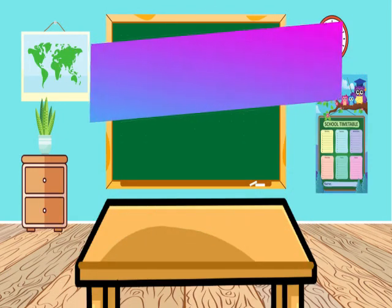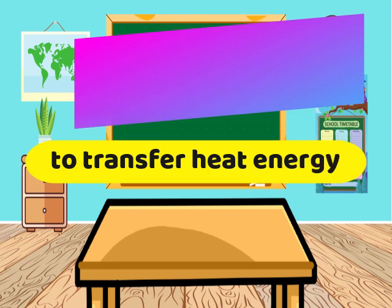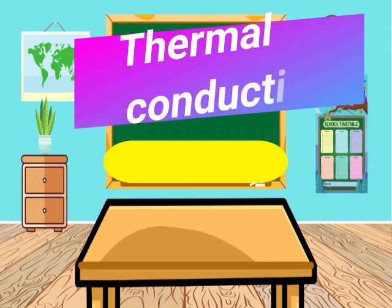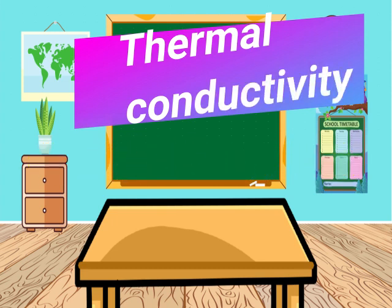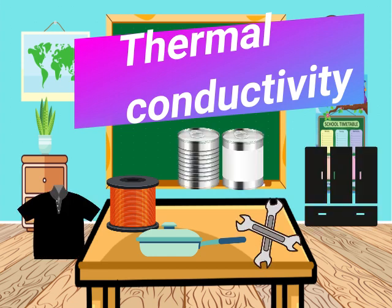Thermal conductivity is the ability of a material to transfer heat energy from one area to another. Materials that are heat conductors and heat absorbers have high thermal conductivity. Metals are good conductors, and dark objects are good heat absorbers.